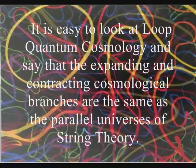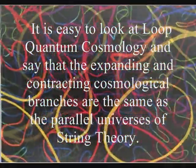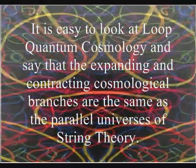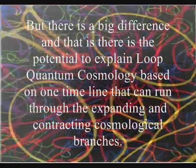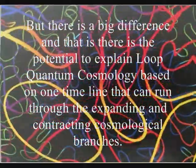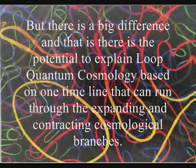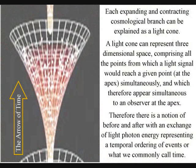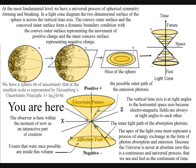It is easy to look at loop quantum cosmology and say that the expanding and contracting cosmological branches are the same as the parallel universes of string theory, but there is a big difference: there is the potential to explain loop quantum cosmology based on one timeline that can run through the expanding and contracting cosmological branches. This can be explained by representing each branch as a light cone, where photon energy can get through the quantum bridge, with the movement of positive and negative charge forming electromagnetic fields that a new expanding cosmological branch can be based upon. Therefore, this is not a multiverse model — we can have one timeline into the past based on the dynamic geometry of one universal process.